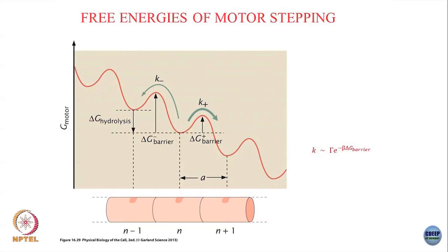In a simple Arrhenius picture, if I think of this free energy barrier or free energy landscape, then these rates are proportional to e to the power of minus beta times delta G of the barrier — the free energy difference of the barrier.